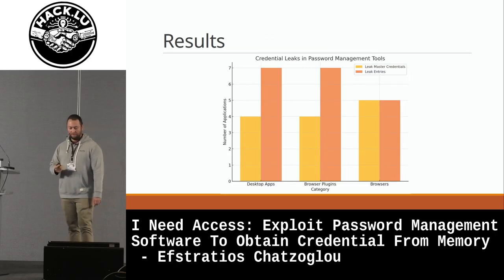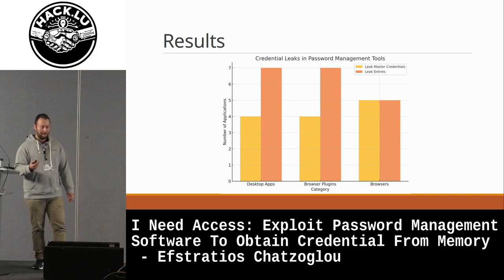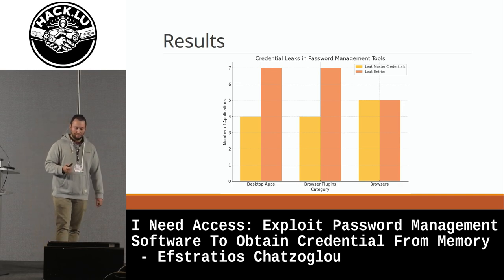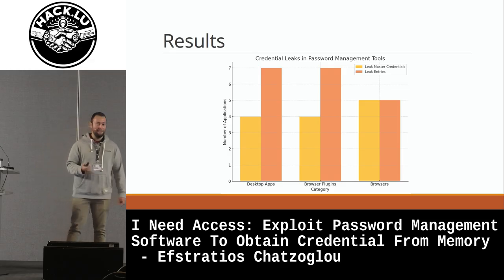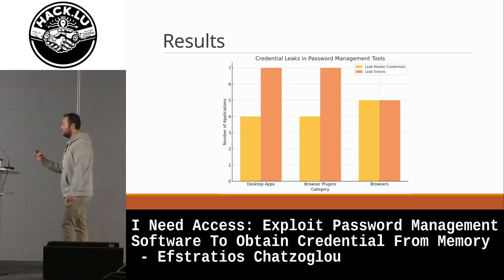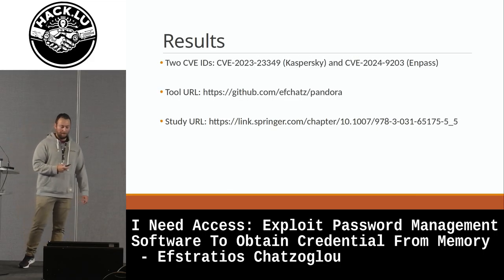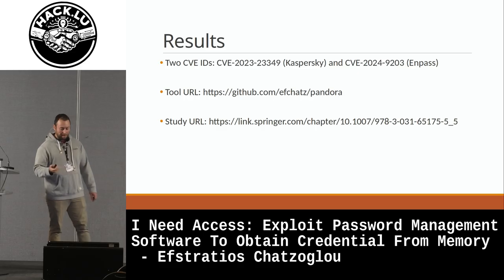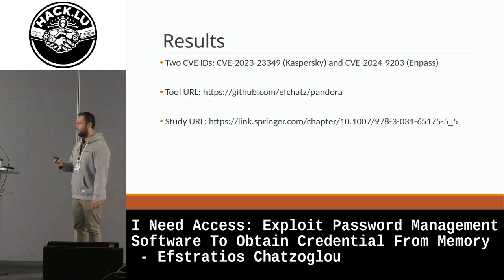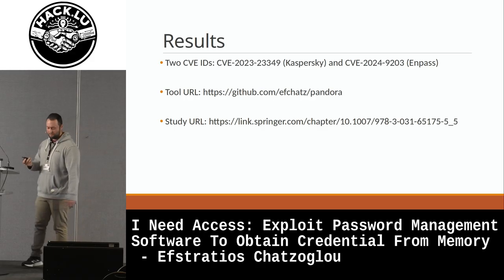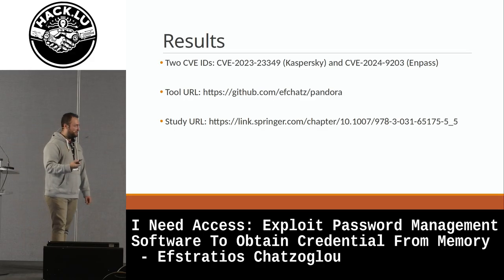Here is a graph to visualize the issue. We have different cases and in most cases we can see that entries can be leaked from the perspective of password managers. As an outcome, we managed to reserve and assign two CVE IDs — one from Kaspersky and one from NPass. They understood the issue and fixed it.